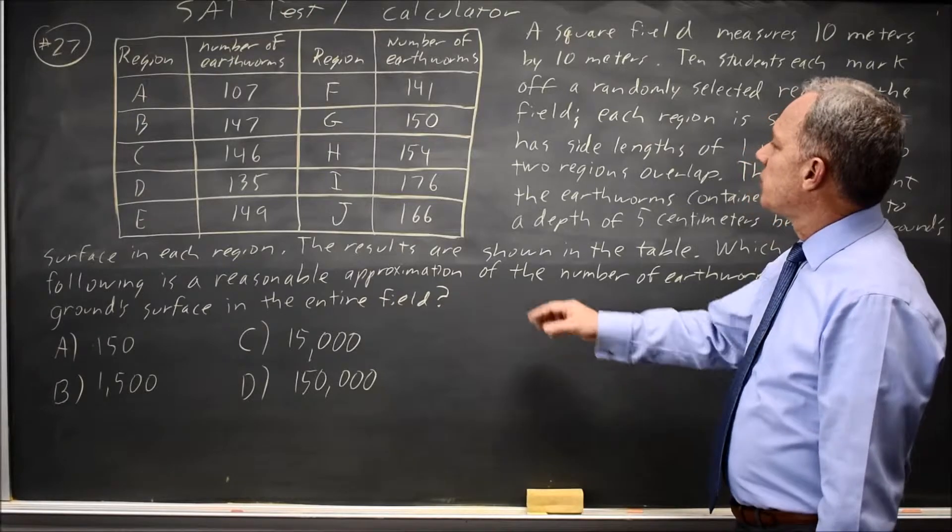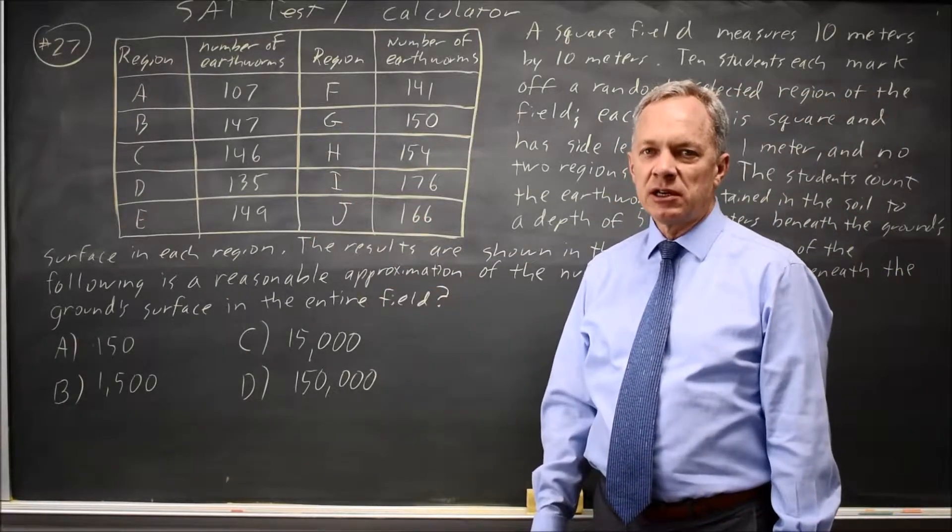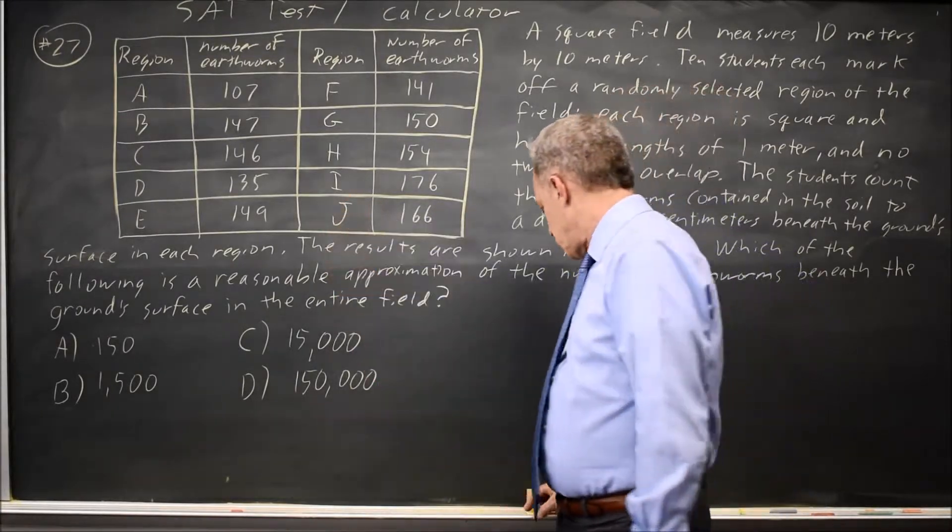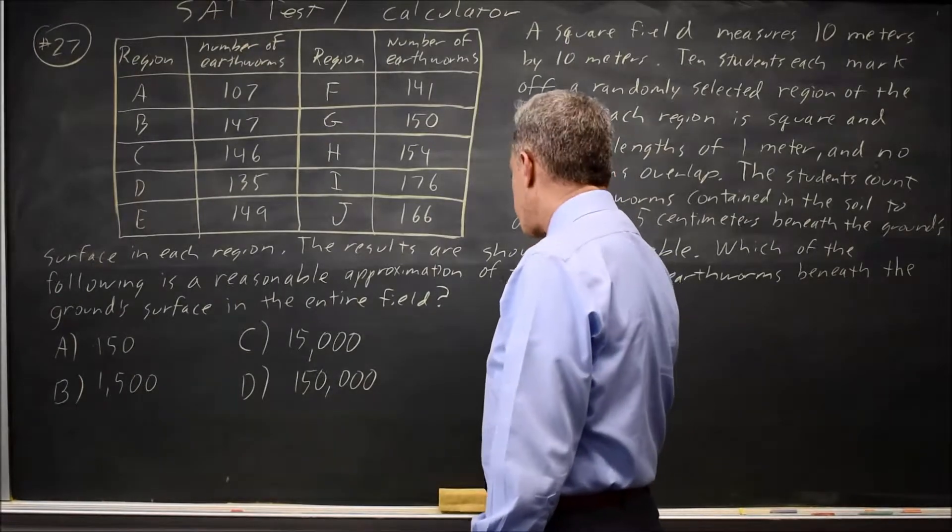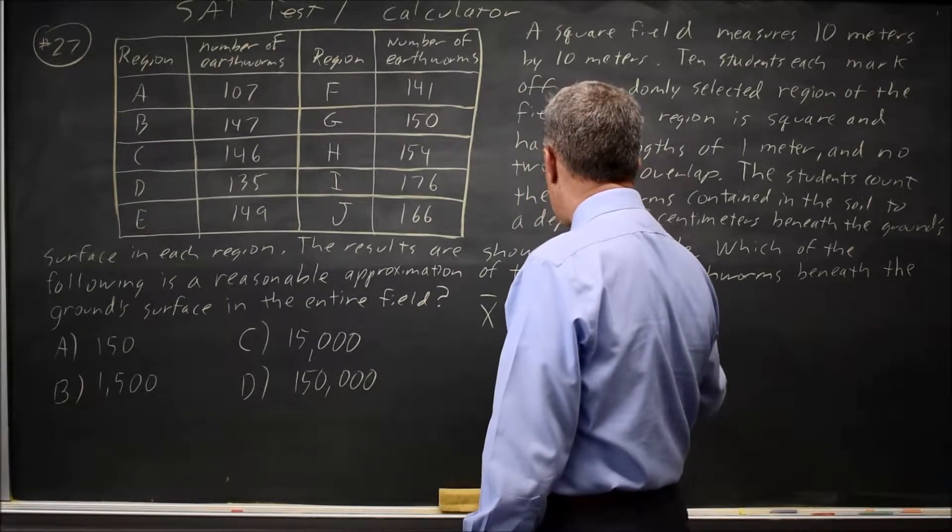In this case, if you add these numbers up and divide by 10 or put them into list 1 and then do one variable statistics, you find the mean number of earthworms per square meter, X bar, is 147.1.